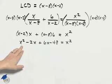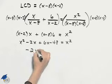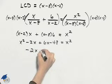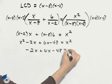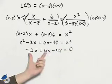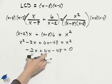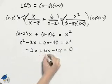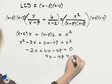We can subtract x squared from both sides of the equation. If I do that, we'll have minus 2x plus 6x minus 48 equals 0. Next, I notice that we have some x terms on the same side of the equation, so we'll just combine those, and we'll have 4x minus 48 equals 0.